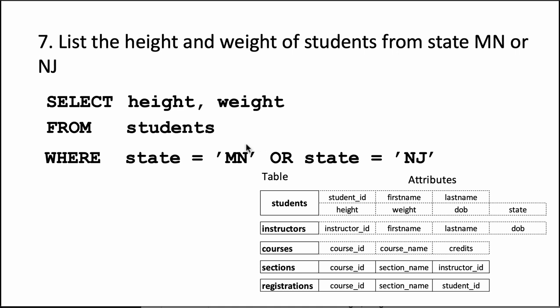Now remember sometimes people just write where state equal to MN or NJ instead of saying state equals MN or state equals NJ. You have to say that. You have to say state equals MN or state equals NJ. You can't just say state equals MN or NJ. You have to mention state for both of those values.